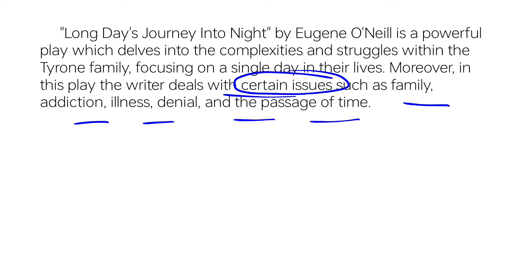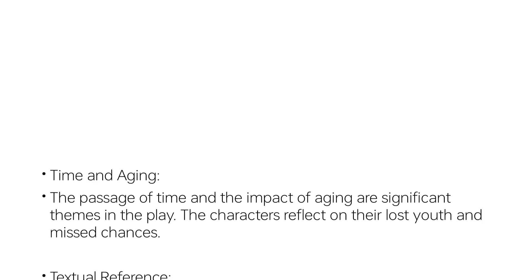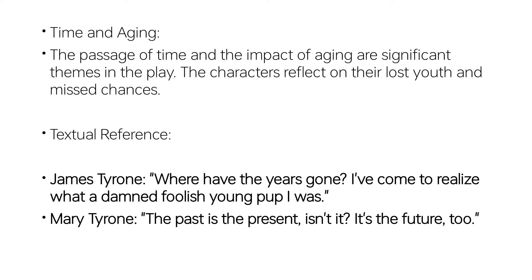This is the first paragraph. Now for the second paragraph, we start where the first paragraph ended. The first paragraph ends with the passage of time, so the second paragraph begins: 'The passage of time and impact of aging are significant themes in the play. The characters reflect on their lost youth and missed chances.'